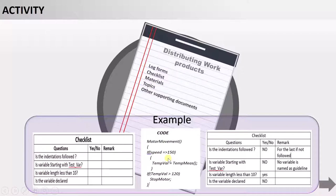The code will also be provided as the topic to review. What the reviewer will do is check the first question — Is the indentation followed? He will check: here the indentation is followed, here also it is followed, here also. But when he comes to this 'if', he sees the indentation is not followed. He will fill the checklist and write 'No — for the last if it is not followed.' That is his comment.